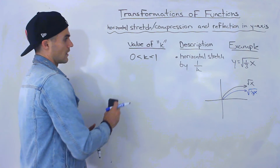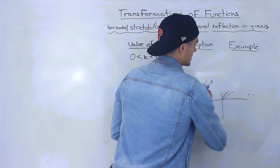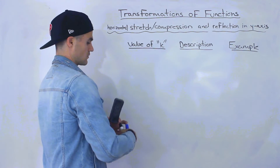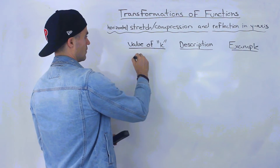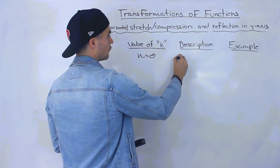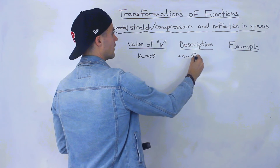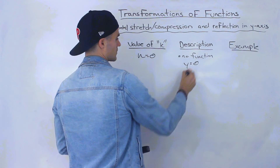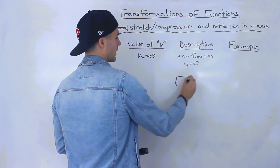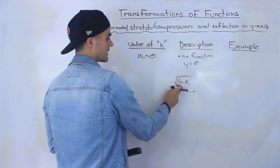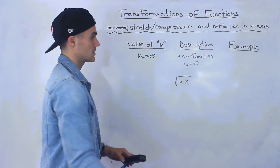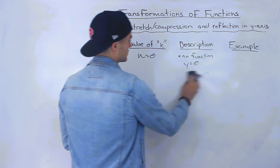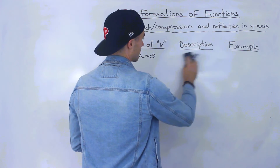Now what if k is equal to 0? Well, if k equals 0 there's no function — you end up with y equals 0, because the square root of kx with k equal to 0 gives zero. You most likely won't run into this scenario.